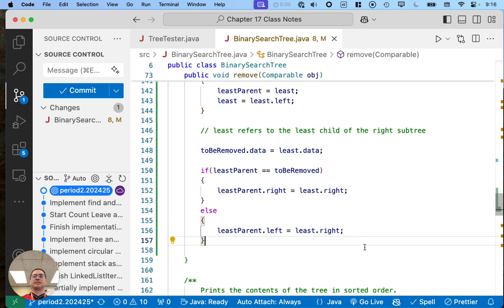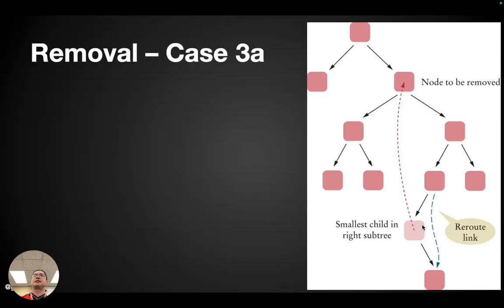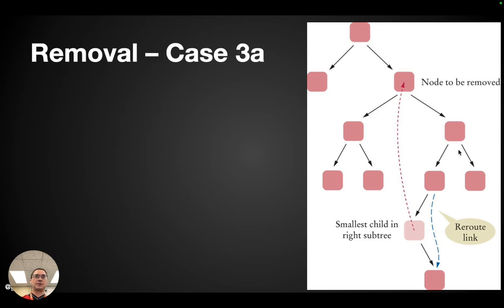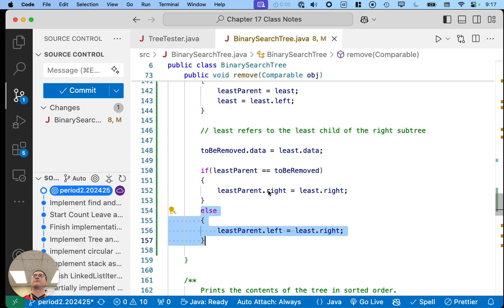Let's look at this visually one more time. The diagram shows the else case: the parent of that least node — we change its left child to refer to the right child of the least node. Imagine however that there is no left child of this node — all of this doesn't exist. In that case, the 'leastParent' is the node to be removed, and we have to update its right child to refer to the least node's right child. That's our special case — that's the if statement.